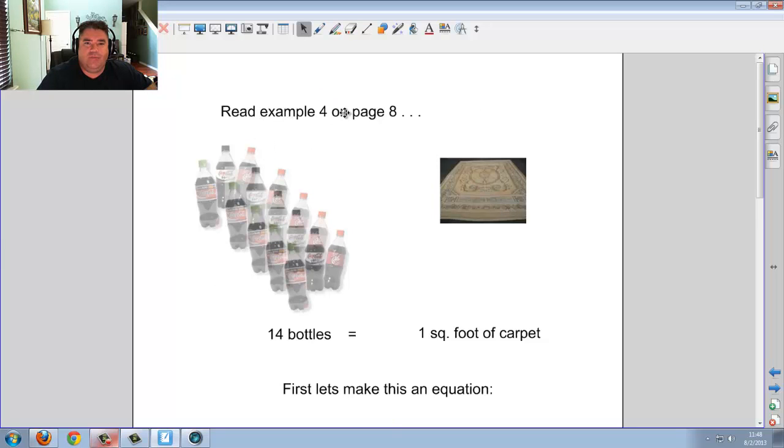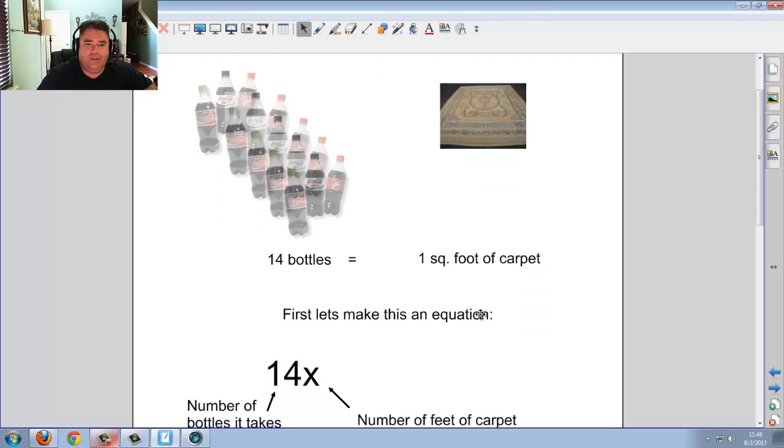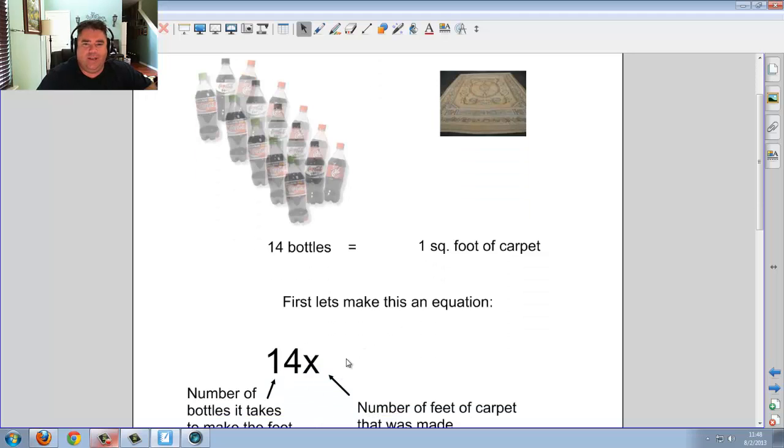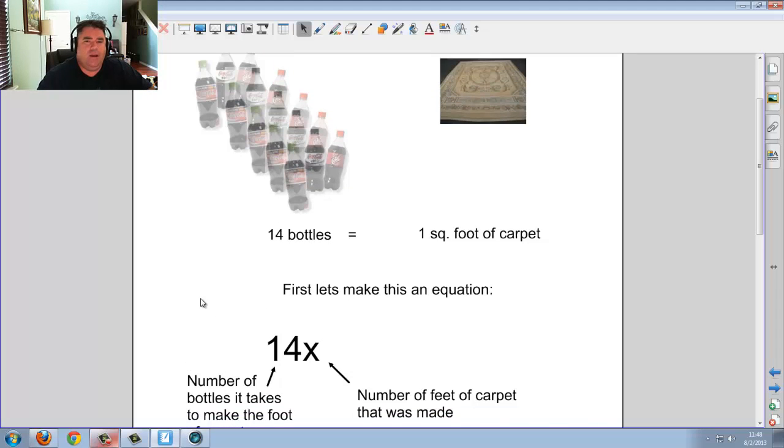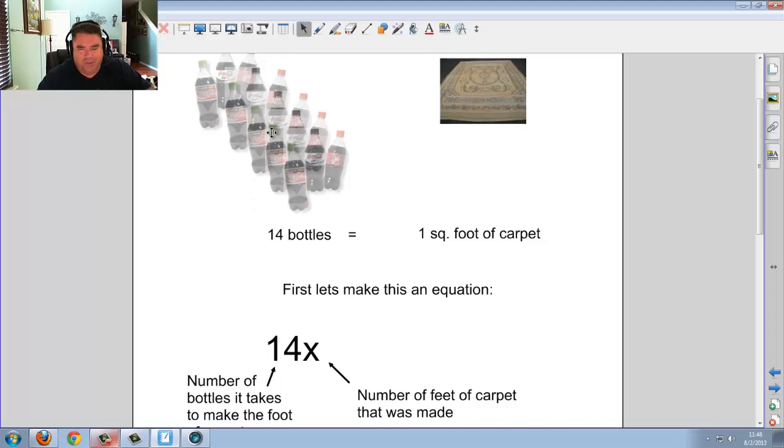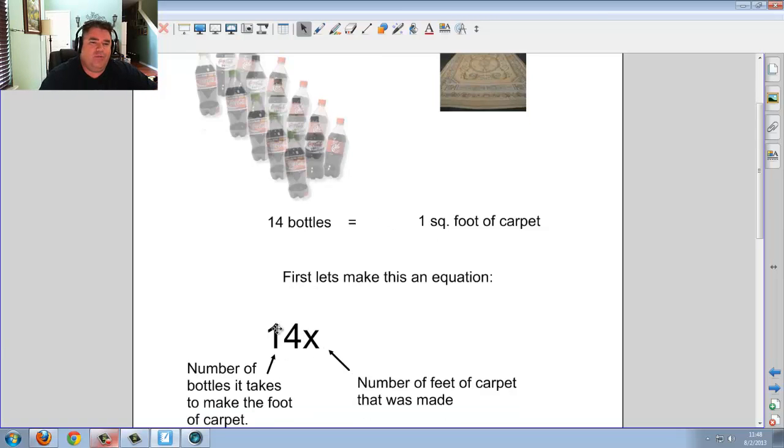Now, you can open your book and read the example 4 on page 8. And it talks about how there are 14 bottles. When they recycle these plastic bottles, they're saying that 14 bottles equal one square foot of carpet. So what they're going to do is they're first going to put 14X. Now, why 14X? Well, 14 is the number of bottles it takes to make a foot of carpet. And remember what they're talking about is when you recycle the bottles, when you melt down the plastic. They're saying that part of that plastic can go into making carpet, not obviously the carpet fibers, but there must be plastic like in the undercoating or something like that.